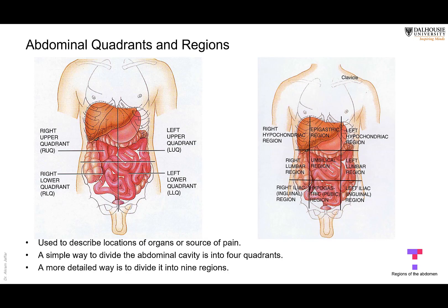We use certain landmarks on the body to refer to structures. In the abdomen, when reporting a pain, lump, or enlarged organ, you can refer to it using quadrants — upper right, upper left, lower left, and lower right. Or you can divide the abdomen into nine abdominal regions using two vertical and two horizontal lines: right hypochondrium, left hypochondrium, epigastrium, right lumbar, left lumbar, umbilical, right inguinal, left inguinal, and suprapubic regions. The nine-region system is more specific and precise.